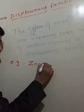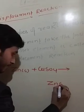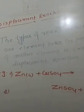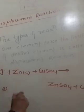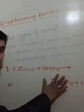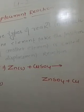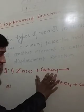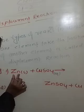For example, zinc displaces copper in a reaction. Zinc replaces copper — this is an example of a displacement reaction.